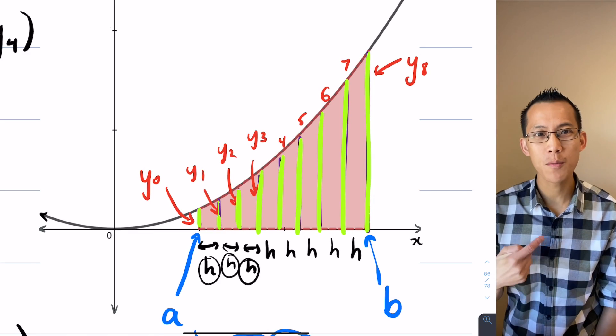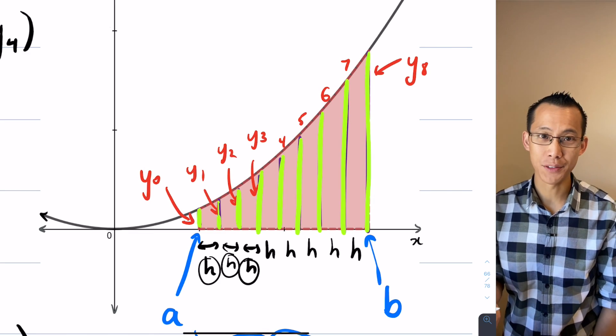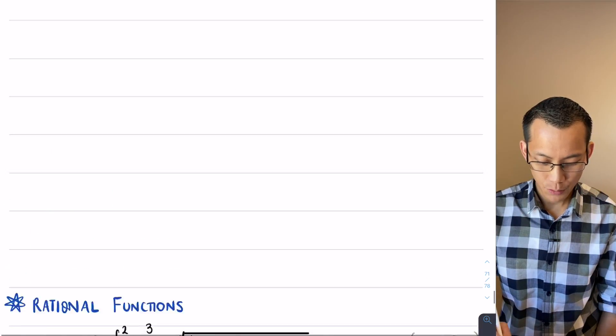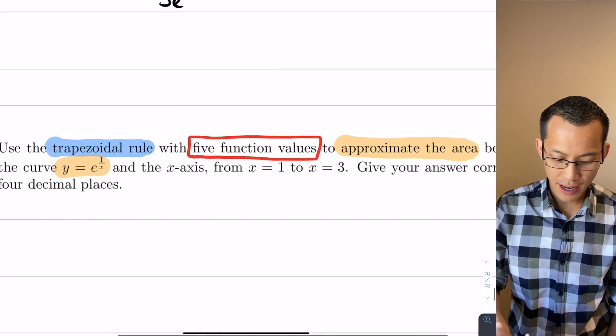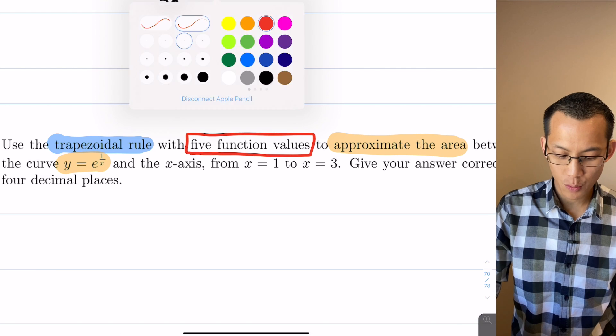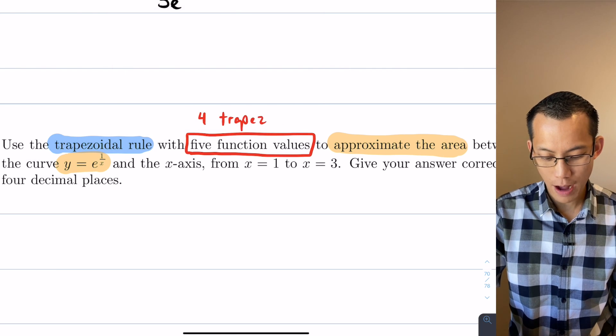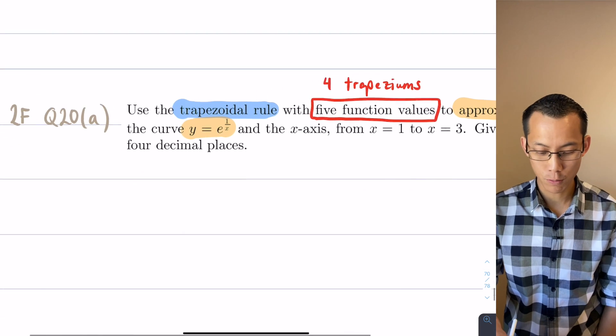So in other words you've always got one more function value than you have trapeziums. So when we come down to this question, this question says five function values, so that's another way of saying using four trapeziums or four applications of the trapezoidal rule.